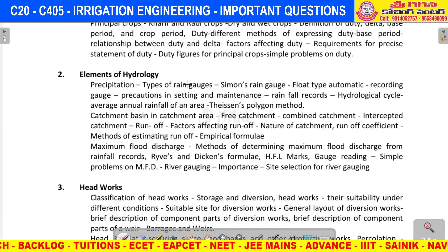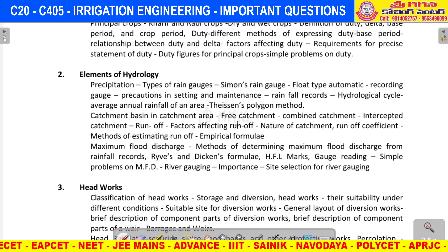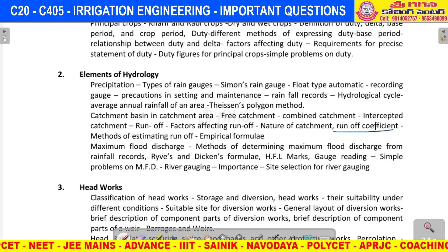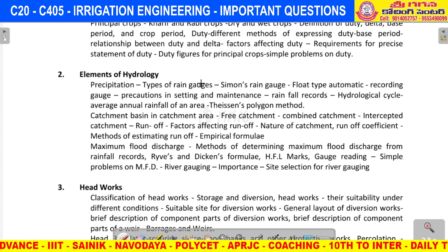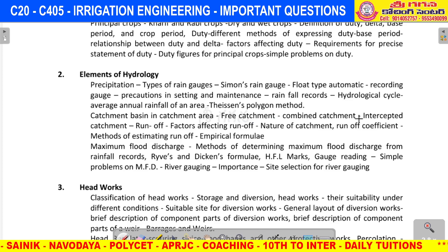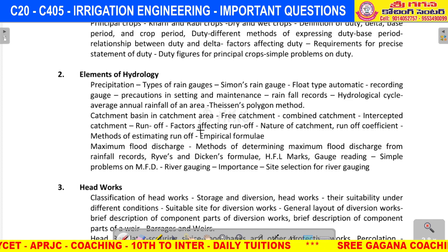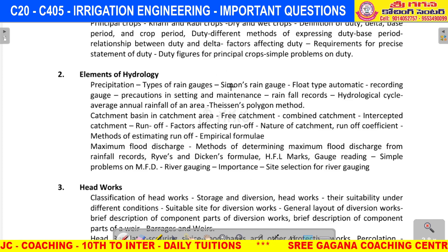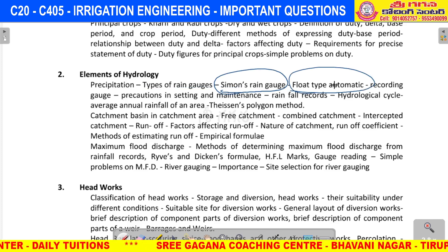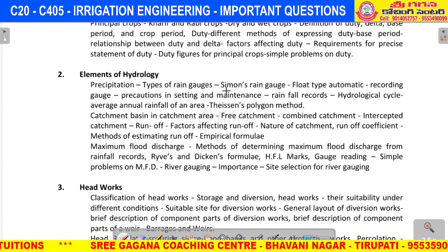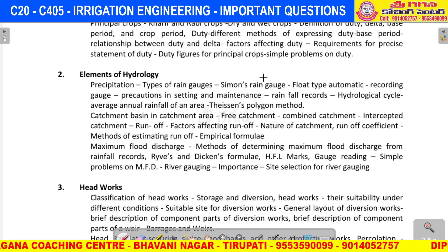Short answer questions for unit 2: what are the types of rain — state the types of rain. Maximum flood discharge, runoff. Factors — write any three factors affecting runoff. What is catchment area? Types of catchment areas — state and explain. Very very important question: types of rain gauges — Simon's rain gauge, float automatic rain gauge. This question requires a diagram to explain rain gauges.